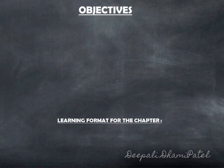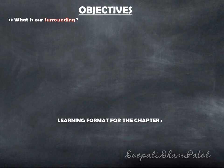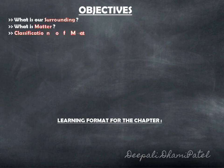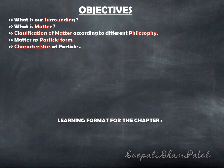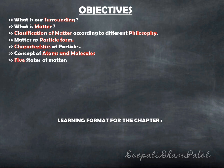Objectives for this chapter are: What is our surrounding? The surrounding around us is made up of matter, and we are going to understand what matter is. We are going to see the classification of matter according to different philosophies. Matter as particle form, and characteristics of these particles which make up the matter. Concepts of atoms and molecules — this topic will be studied in detail in further chapters: Chapter 3 and Chapter 4.